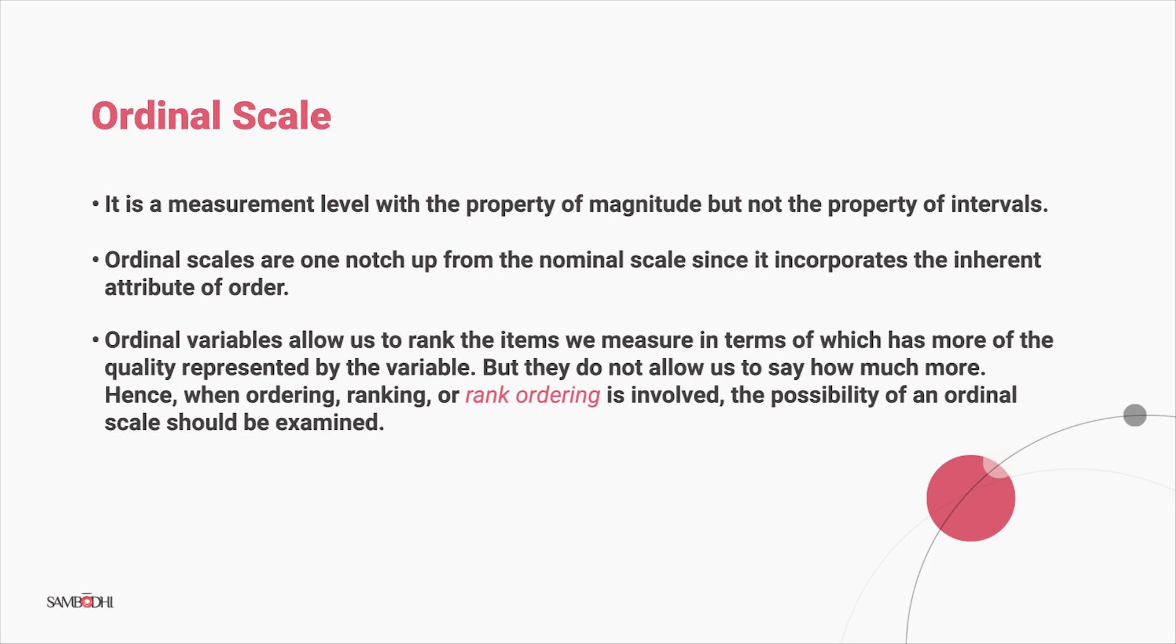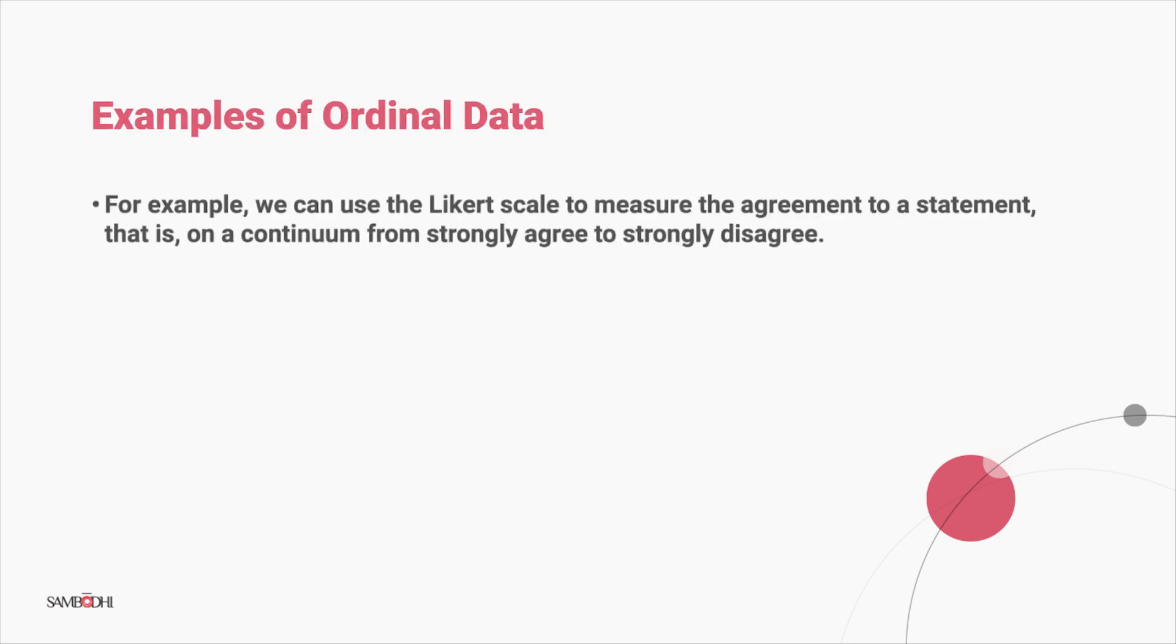Hence, when ordering, ranking or rank ordering is involved, the possibility of an ordinal scale should be examined. For example, we can use the Likert scale to measure the agreement to a statement, that is, on a continuum from strongly agree to strongly disagree. The socio-economic position of families is another example of an ordinal scale.